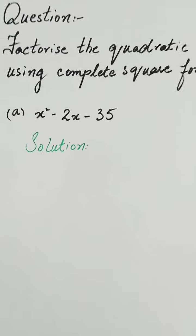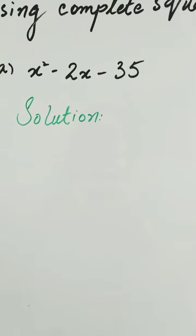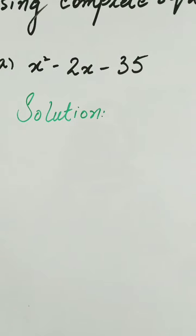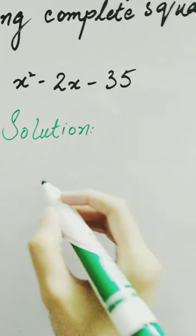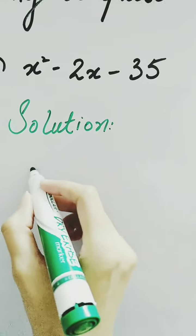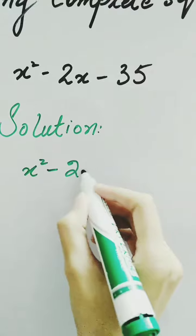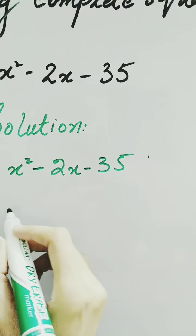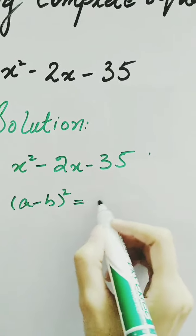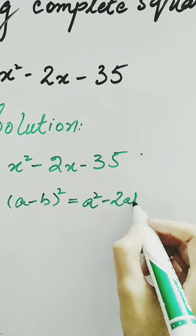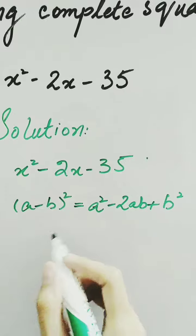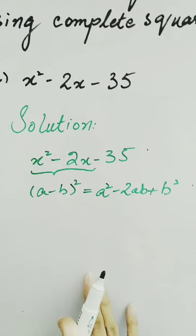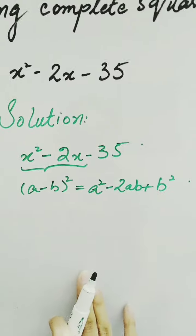Here is the question: x squared minus 2x minus 35. This is a quadratic expression. So first we need to convert it into a complete square form. In order to do that, we will use the formula as learned in our previous videos. Here there is a minus sign, so we use the formula of (a minus b) whole square, which equals a squared minus 2ab plus b squared. We use the two terms involving x squared and x to convert into complete square form.